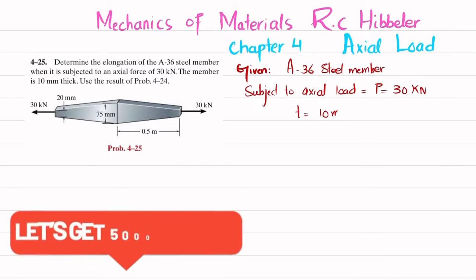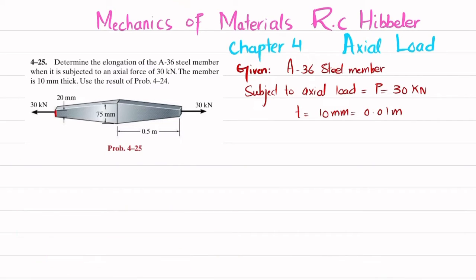10 millimeters, which in meters is 0.01 meters. Now you can see this smaller width which is taken as d1, and that d1 is equal to 20 millimeters or 0.02 meters. This width, which is the largest width, is taken as d2, and d2 is equal to 75 millimeters or 0.075 meters.